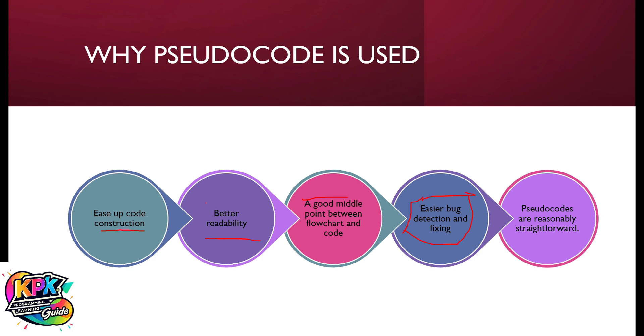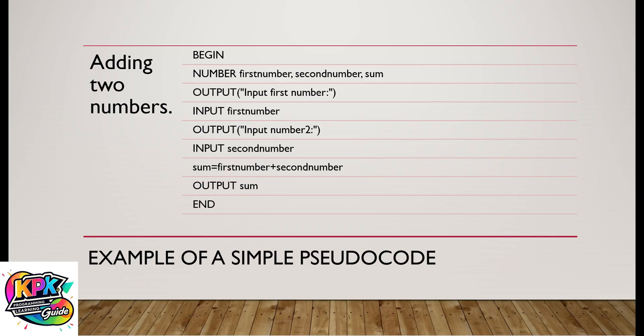Pseudocodes are reasonably straightforward — they are direct, fixed, clear, and not ambiguous. So let's look at some examples of pseudocodes.